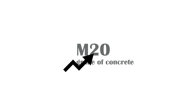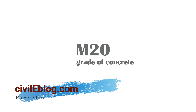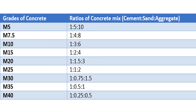For example, for M20 grade of concrete mix, its compressive strength after 28 days should be 20 Newton per mm square. Here is the standard chart table showing various grades of concrete mix along with their respective ratios of cement, sand, and aggregates required.